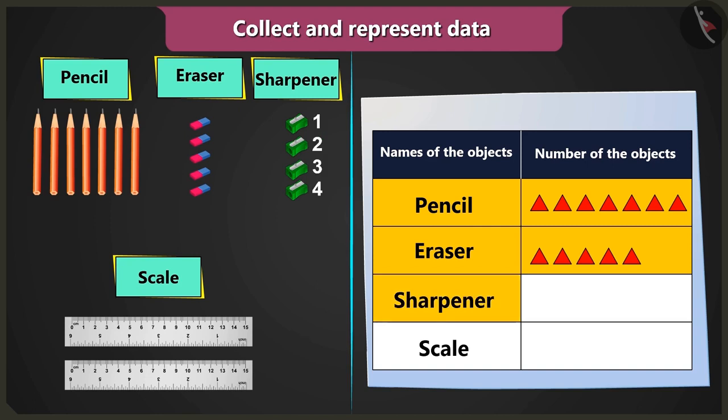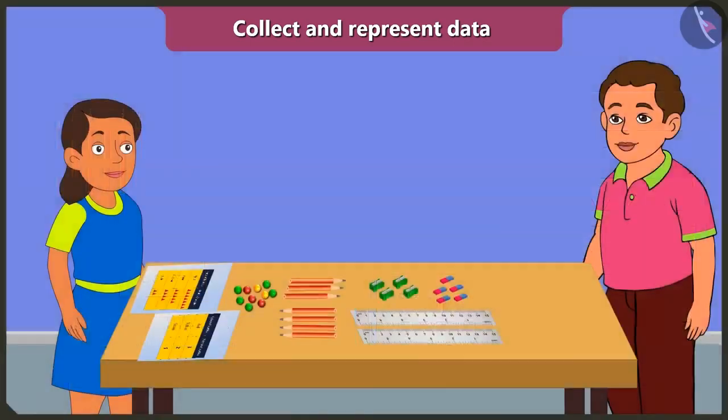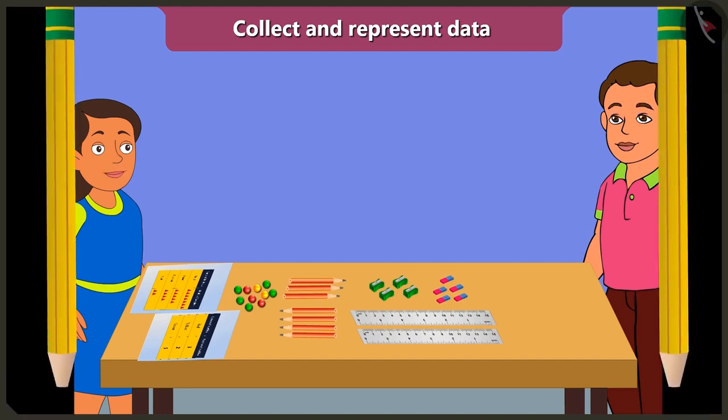I have four sharpeners, so I have to draw four triangles. And I have two scales, so I have to draw two triangles. Absolutely right. Well done, Bubbly. Oh, wow. It is very interesting.